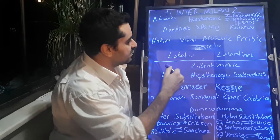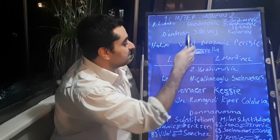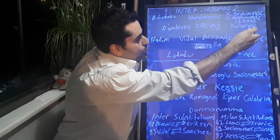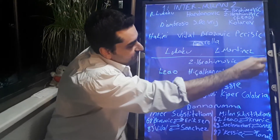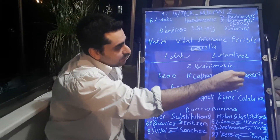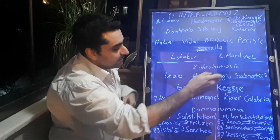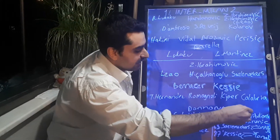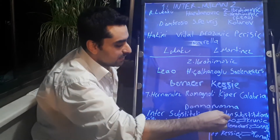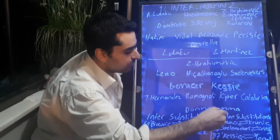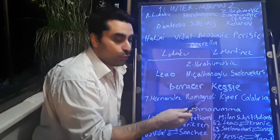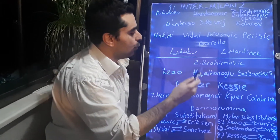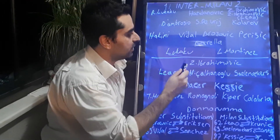In the second half, Perisic brought a ball from the left side, came into the penalty area and played his pass into it. Lukaku scored the goal, making the score 2-1.